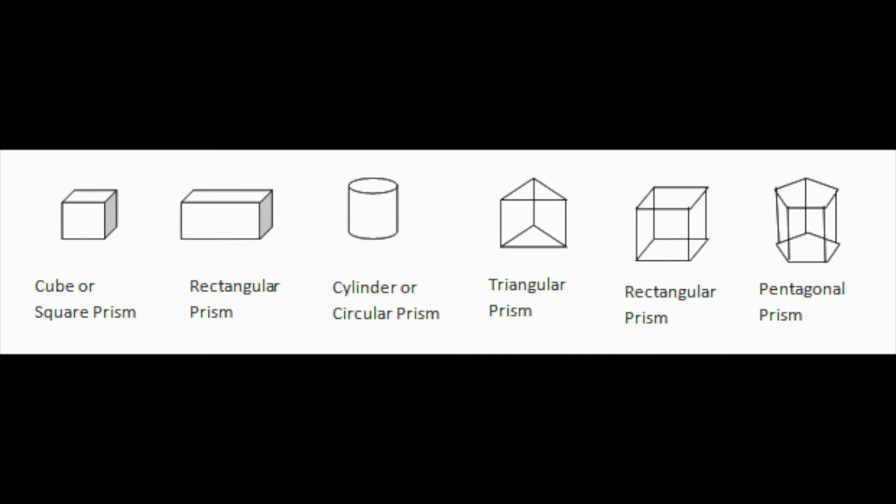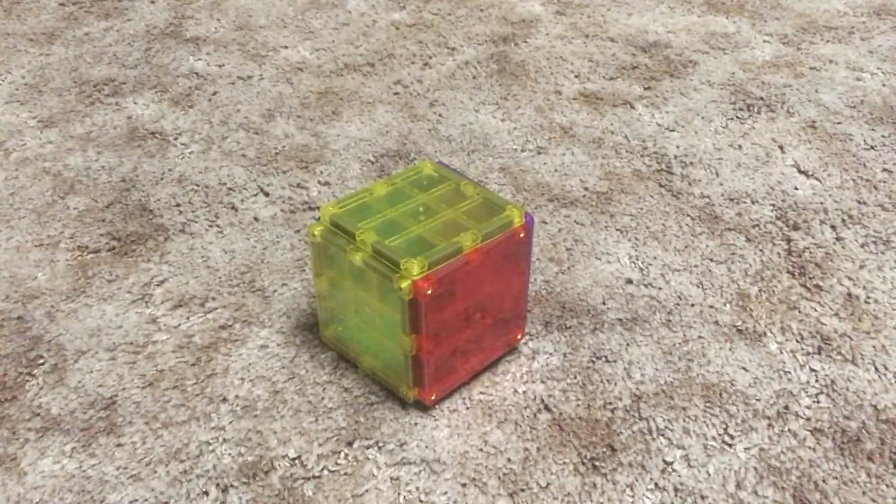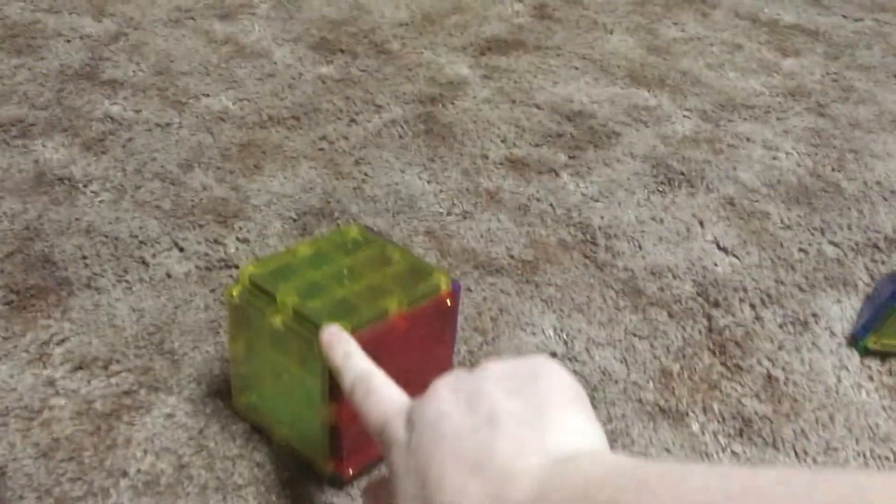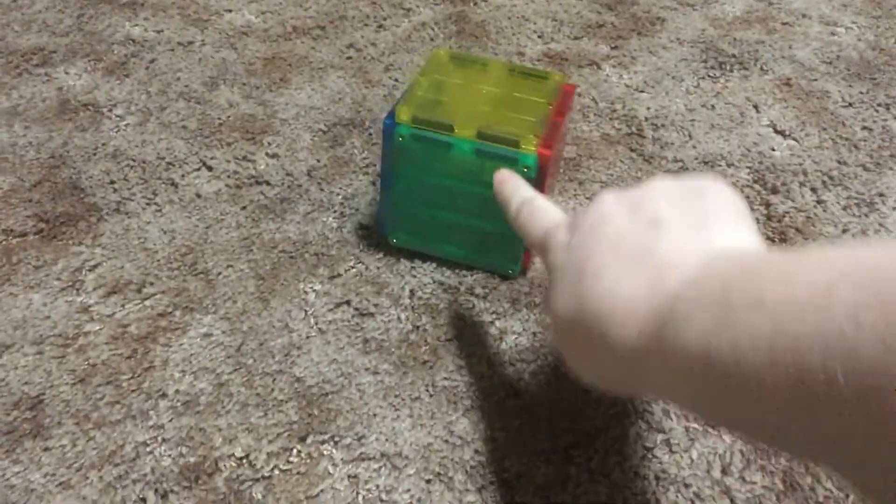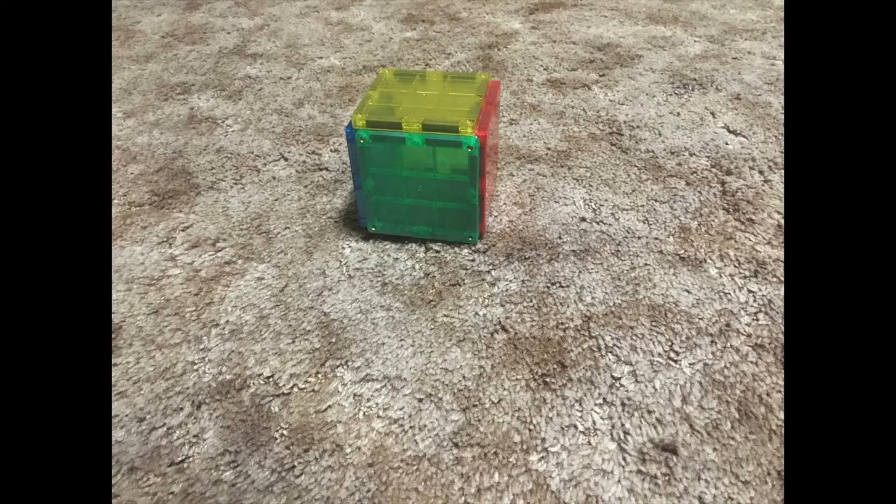Plus two for the number of bases. Now this one happens to be a cube, but with any rectangular prism I always like to say that it's got the top and the bottom and then the front, back, left, and right. And so then that gives you six faces.